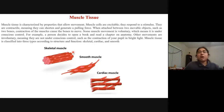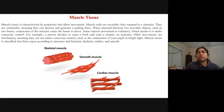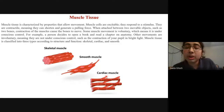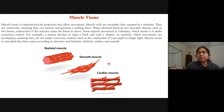Muscle tissues are characterized by properties that allow movement. There are three major types: skeletal, smooth, and cardiac muscles. Cardiac muscles are everything about the heart — they help in the beating and make the heart function. Smooth muscles and skeletal muscles are also very important, and their contractions are under control of the whole system. Any problem in muscle function will be a major problem.